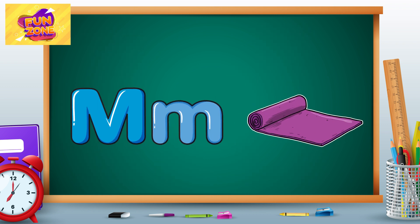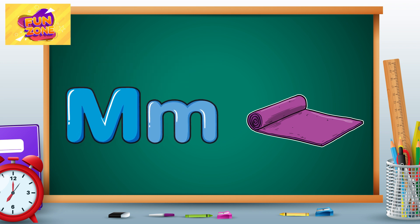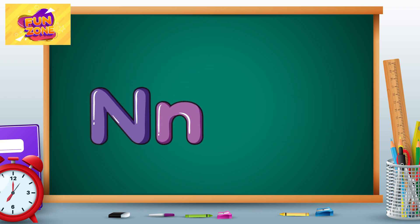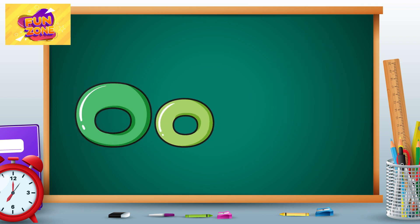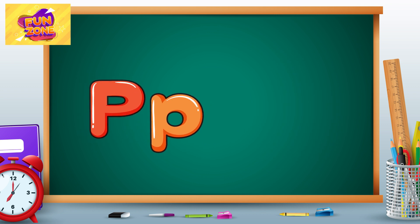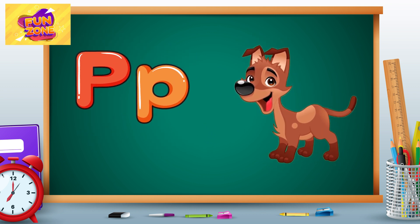M is for mat, m-m-mat. N is for net, n-n-net. O is for orange, o-o-orange. P is for pet, p-p-pet.